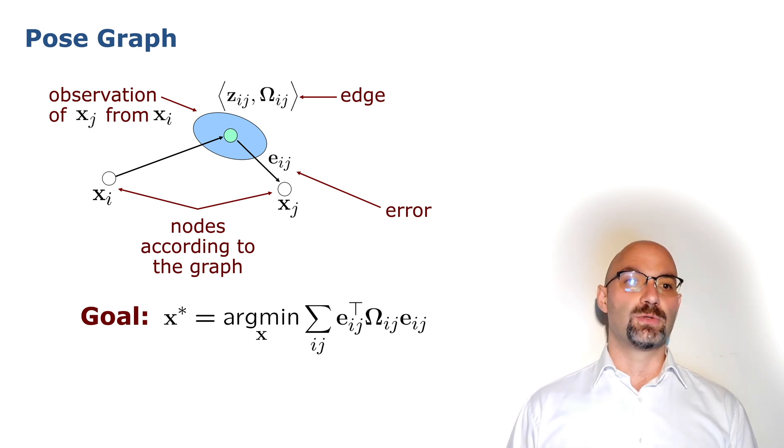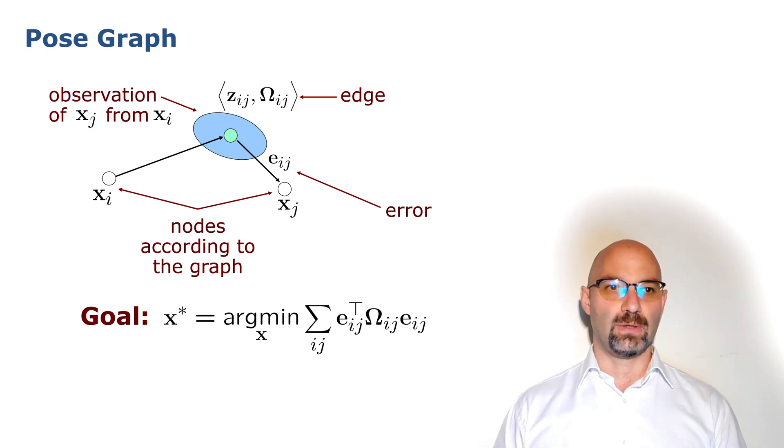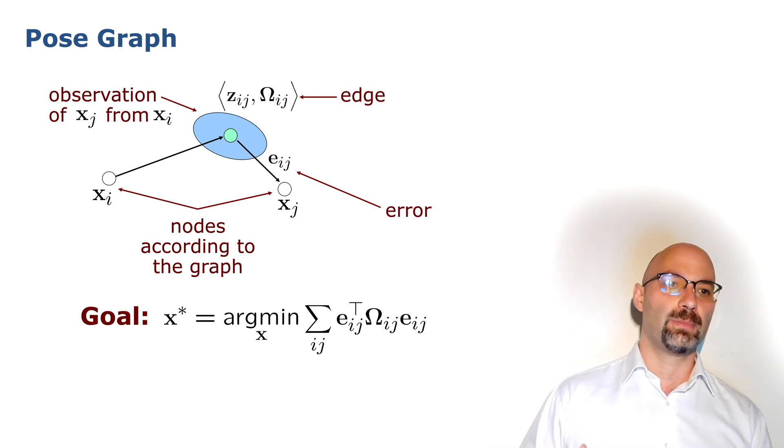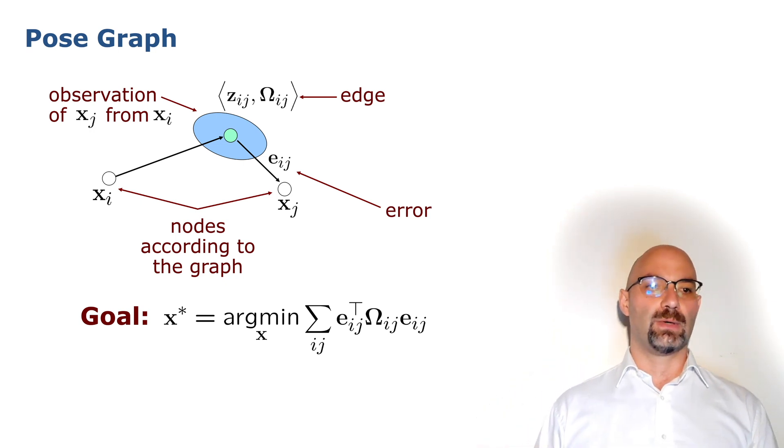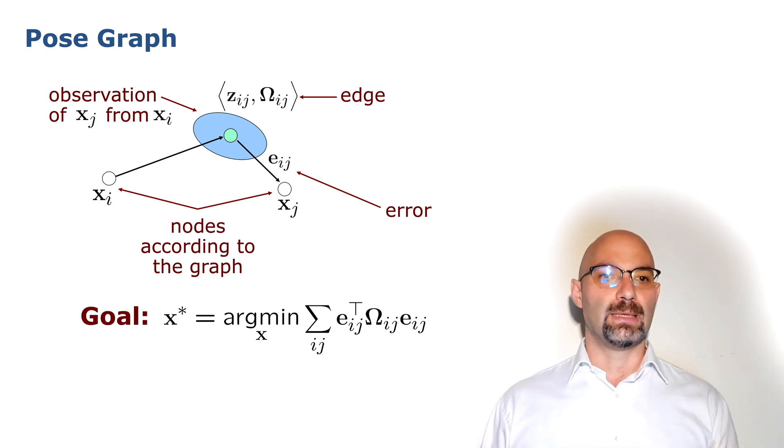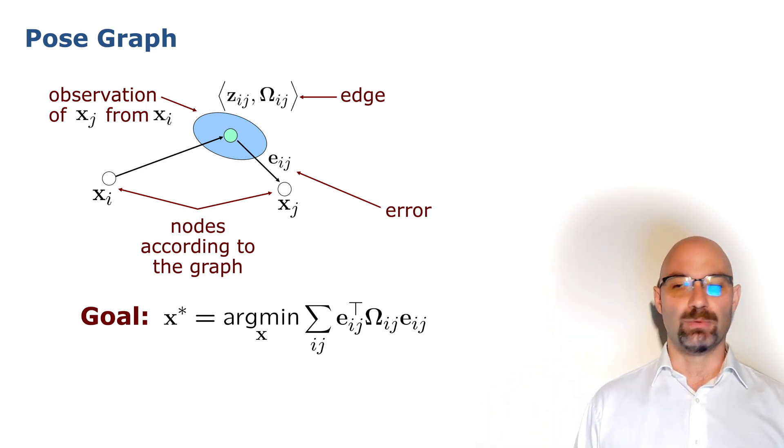We recall that correctly estimating this virtual measurement is of crucial importance for the optimization problem, because otherwise what we try to solve has no meaning and so will be the resulting method at the end. Now let's look a little bit inside one of these virtual measurements. We already said that the virtual measurement encodes a relative position between two nodes. This slide illustrates a simplistic two-poses graph optimization problem. The blue dot and the blue circle represent respectively the measurement and its associated uncertainty.